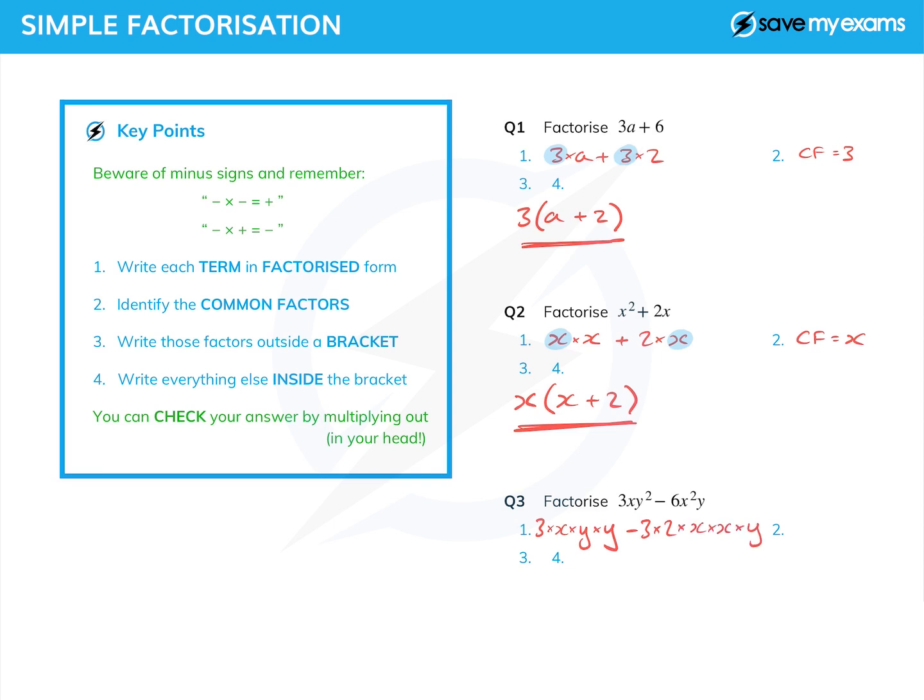There's an awful lot going on there, but we can pick out the common factors. There's a 3 in each one, there's an x in each one, and there's a y in each one. So my common factors this time—well, my common factor is 3xy.